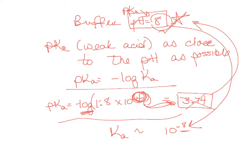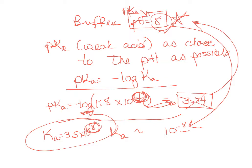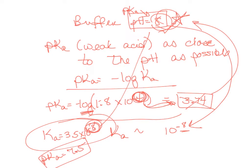That is hypochlorous acid and its conjugate base. The Ka of hypochlorous acid is 3.5 times 10 to the minus 8. Taking the minus log gives pKa equals 7.5 — not exactly 8, but close enough to control the buffer tightly around that pH.